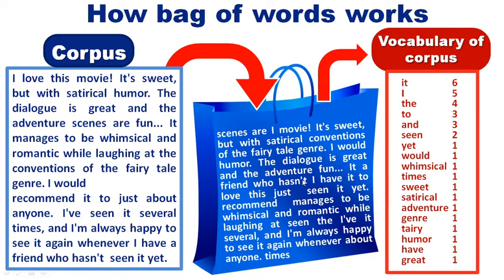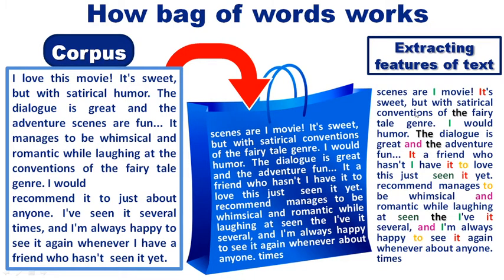So the whole procedure of the bag of words NLP model is: corpus → bag of words processing → output as a dictionary or vocabulary list. This dictionary contains two pieces of information: unique words of the corpus, and the count of occurrences of those unique words. For example, 'I' comes six times but is listed only once in the dictionary with the count six.